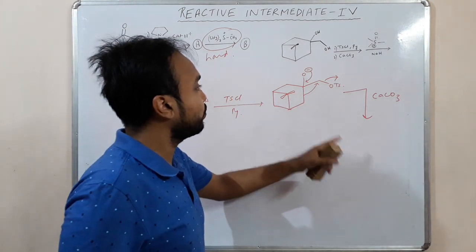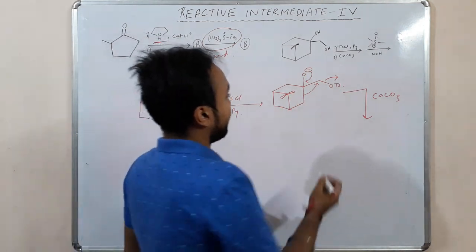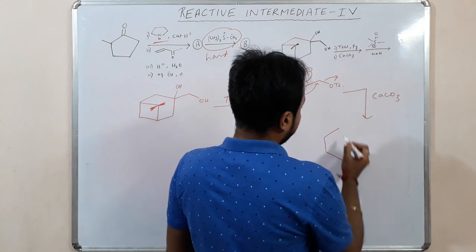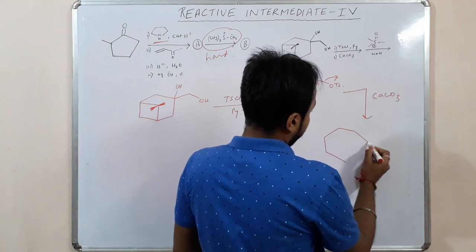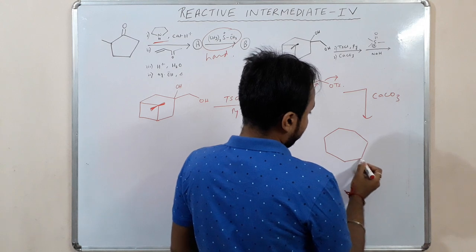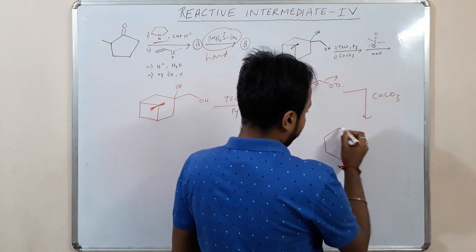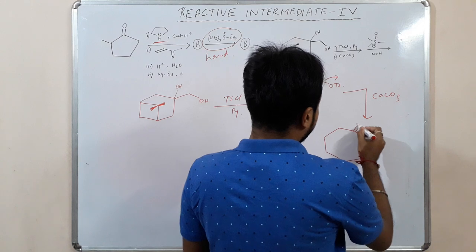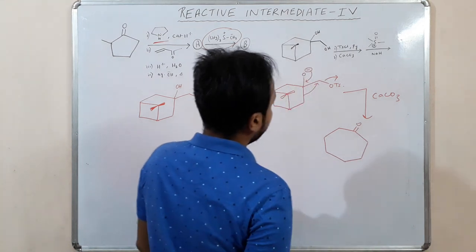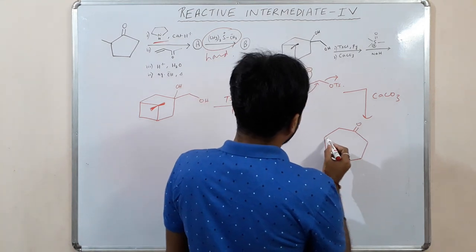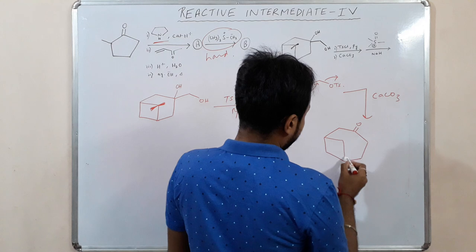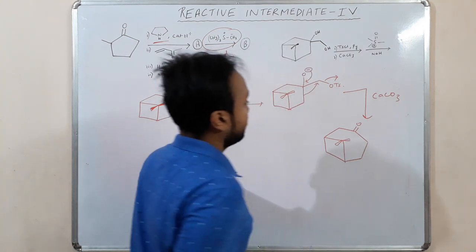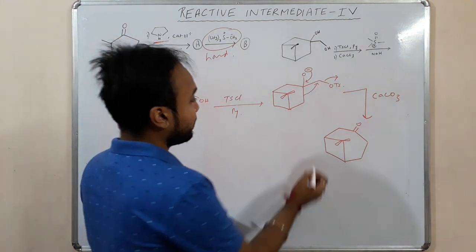This leads to the formation of a 7-membered ring: 1, 2, 3, 4, 5, 6, 7. So we have a ketone here and a 7-membered ring.